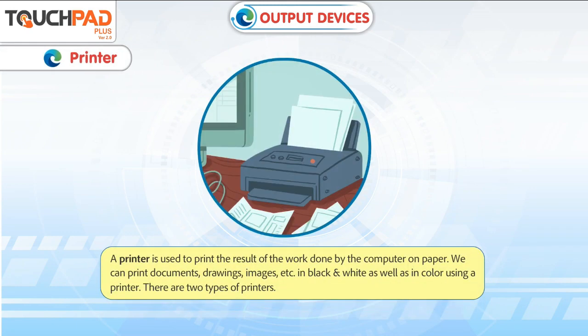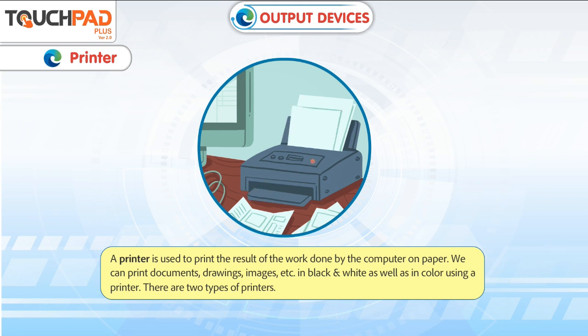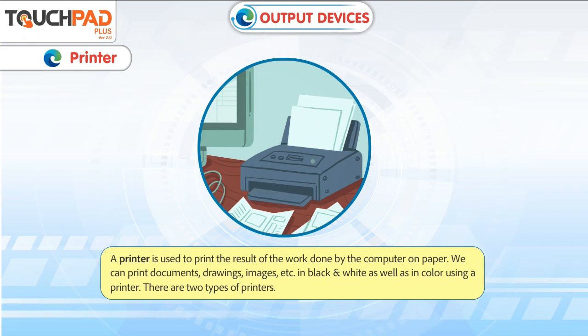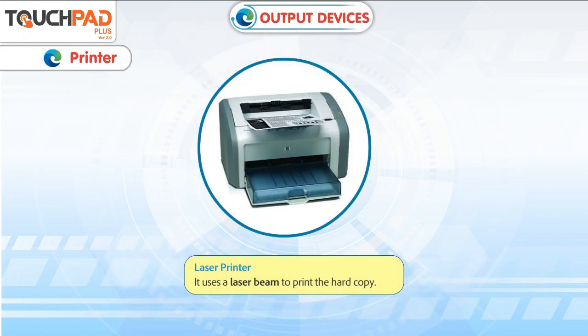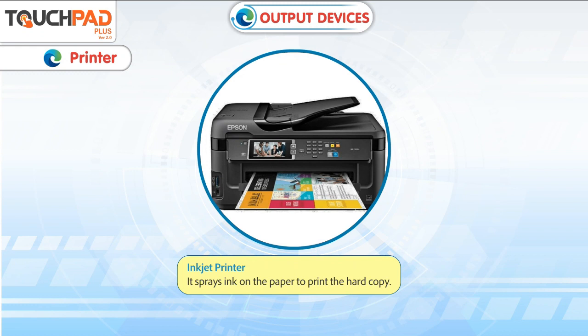A printer is used to print the result of the work done by the computer on paper. We can print documents, drawings, images, etc. in black and white as well as in color using a printer. There are two types of printers: Laser Printer, which uses a laser beam to print the hard copy, and Inkjet Printer, which sprays ink on the paper to print the hard copy.